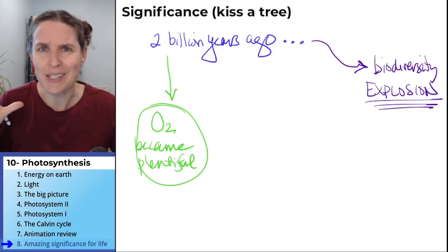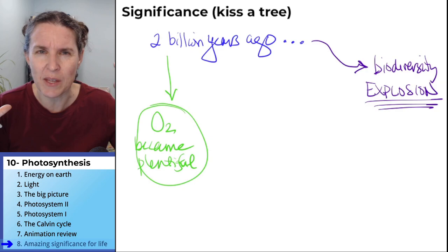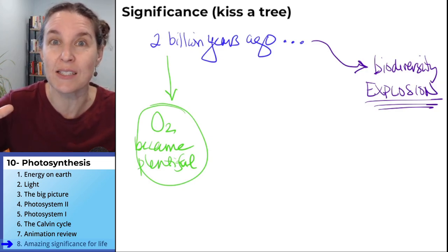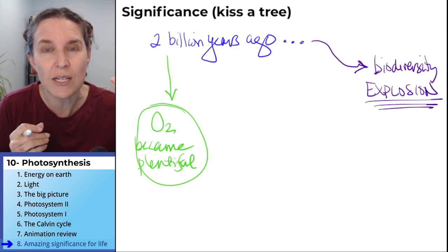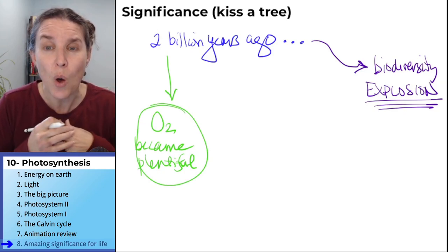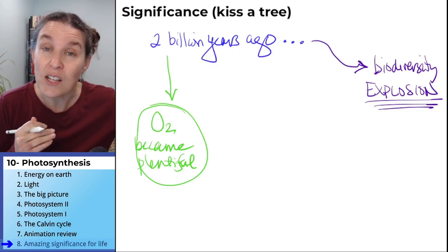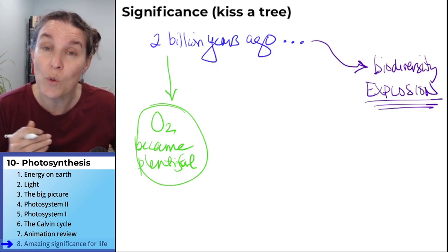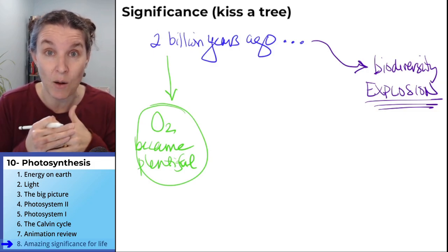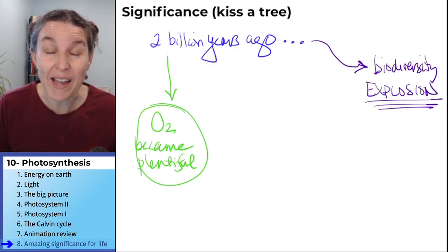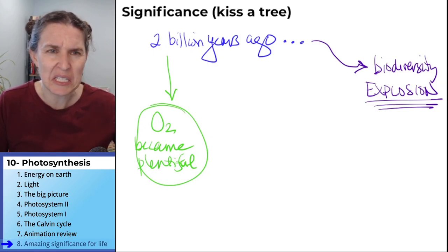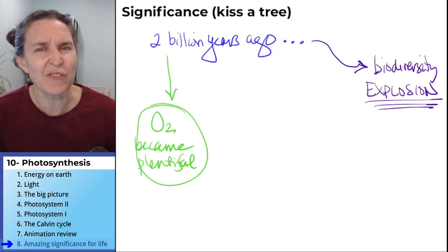In dinosaur times, there was a prehistoric time when the oxygen concentration in the atmosphere was more than it is now. And the critters were bigger and wilder. Like you've seen really humongous bugs and crazy huge dragonflies.